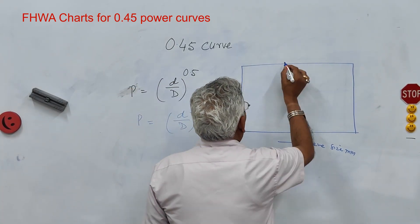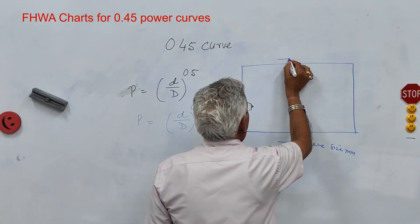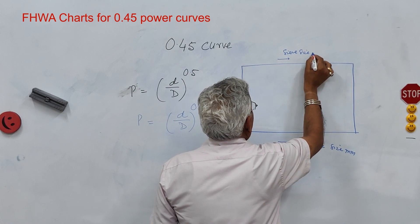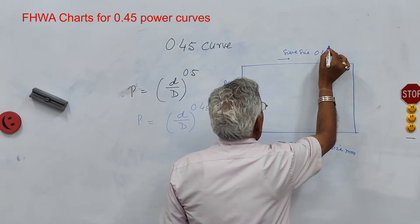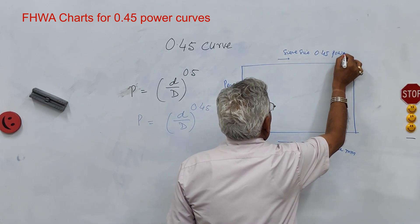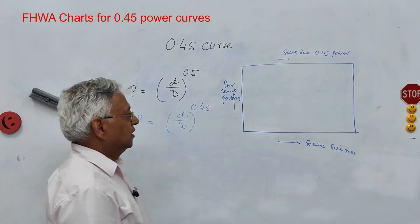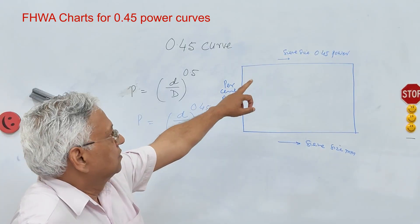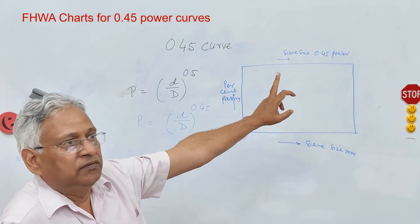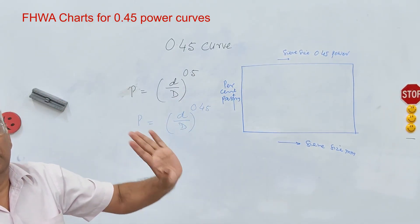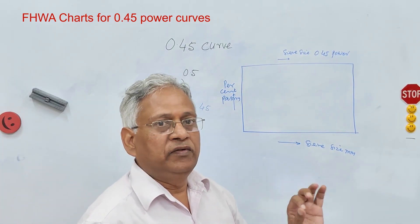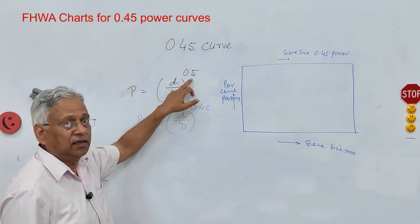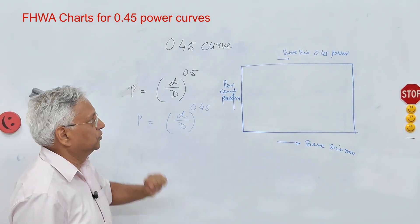Then on this axis you have the sieve size raised to power 0.45. When you take the sieve size raised to 0.45 this curve becomes a straight line. Although when you plot this curve corresponding to 0.5 it is also a straight line.